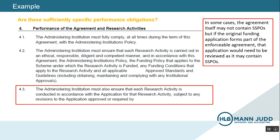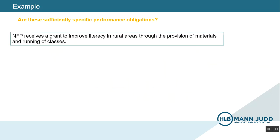It is also these items that can give the grant recipient some input in determining the requirements of the agreement. Next, I would like to run through a few more simplified scenarios. Real funding agreements are rather long, so it is difficult to always use real examples. In this first scenario, the NFP receives a grant to improve literacy in rural areas through the provision of materials and running of classes. Would that be considered sufficiently specific? In my opinion, it wouldn't. It is a general statement and you would struggle to allocate the transaction price to a performance obligation or determine when a performance obligation was satisfied.